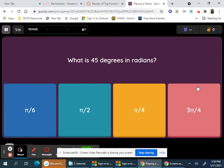All right, this is a video of the quiz's review. So what is 45 degrees in radians? It's 45 pi over 180, and then you simplify it to pi over 4.